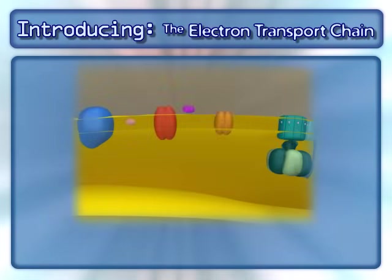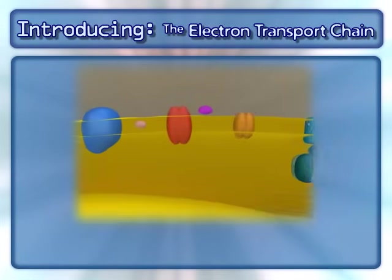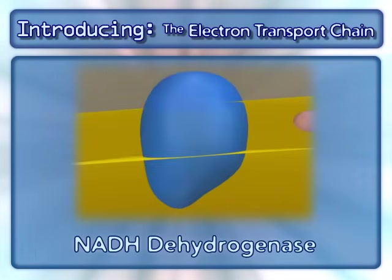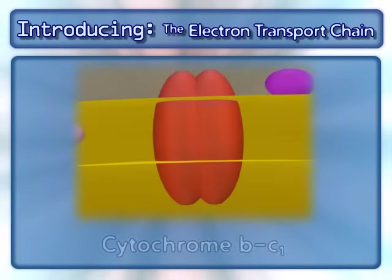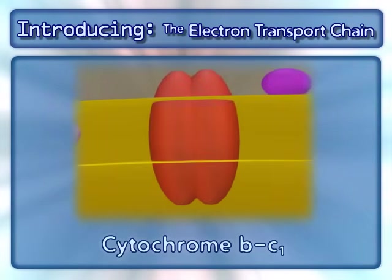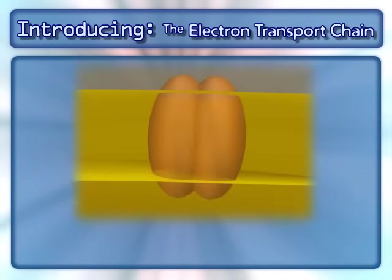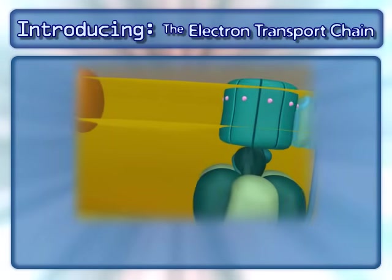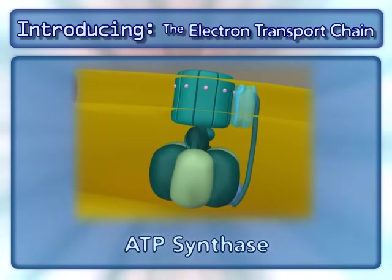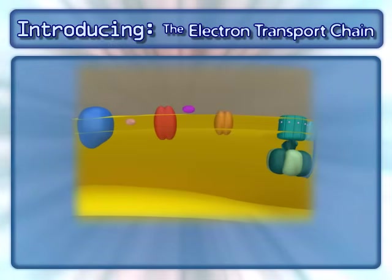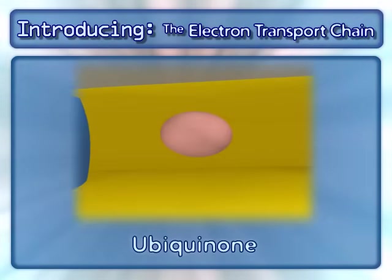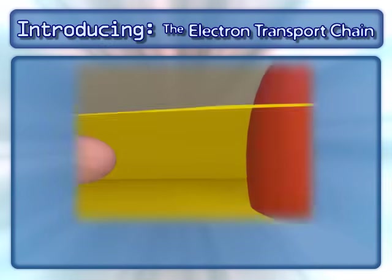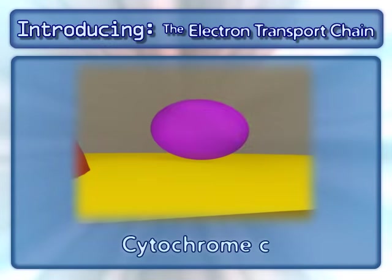The following complexes are found in the electron transport chain: NADH dehydrogenase, cytochrome BC1, cytochrome oxidase, and the complex that makes ATP — ATP synthase. In addition to these complexes, two mobile carriers are also involved: ubiquinone and cytochrome C.